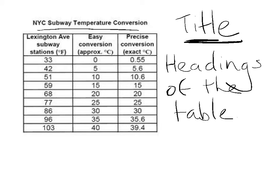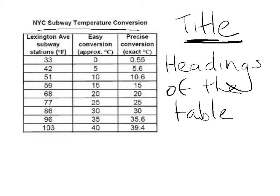When we interpret a table like this, the first thing we need to look for is the title. The title in this case is NYC Subway Temperature Conversion. NYC stands for New York City. So that gives us a clue about what this table is about — it's to do with temperature and conversion.